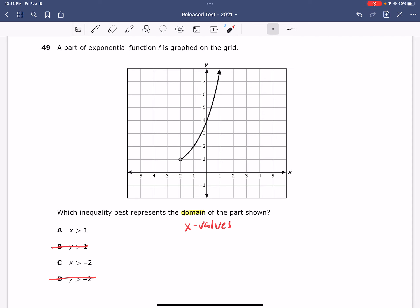From there, we have A and C. The difference between the two is that one of them has a 1, and the other one has a negative 2.